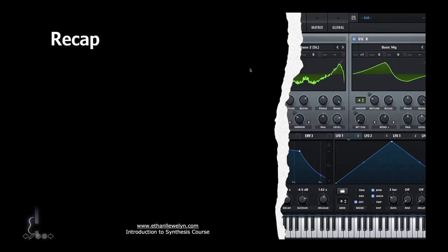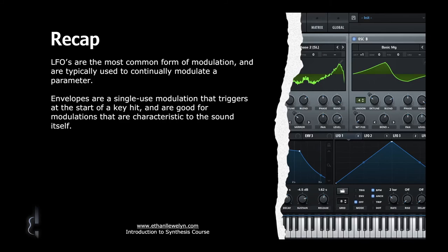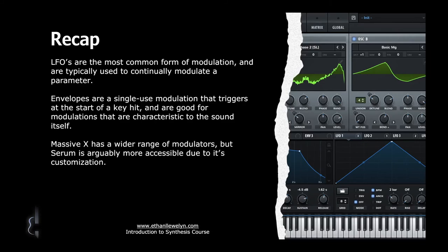Just to recap: LFOs are the most common form of modulation and are typically used to continually modulate a parameter back and forth. Envelopes are a single-use modulation that triggers at the start of a key hit and are good for modulations that are characteristic to the sound itself - like shaping the attack of a pluck sound. Massive X has a wider range of modulators but Serum is arguably more accessible due to its customization. The LFOs on Serum are arguably superior to those on Massive X due to the visual aspects and the ability to create custom waveforms rather than being restricted to presets.